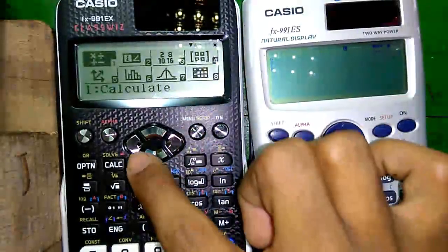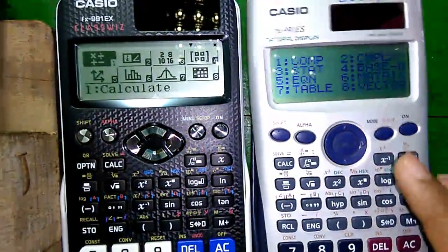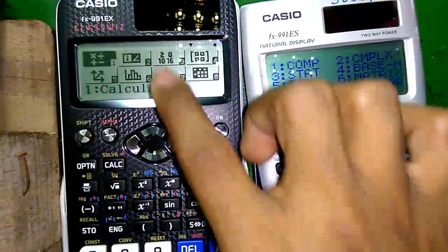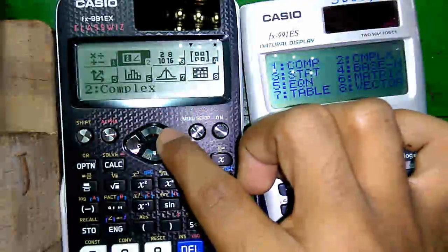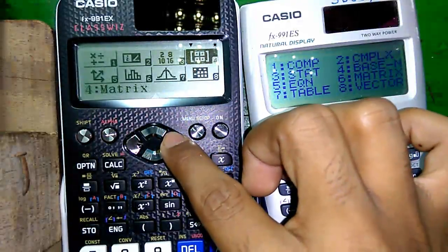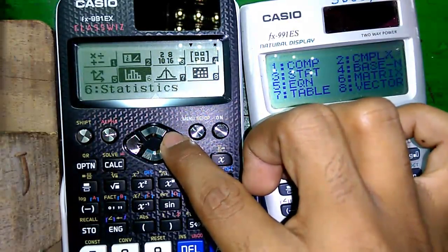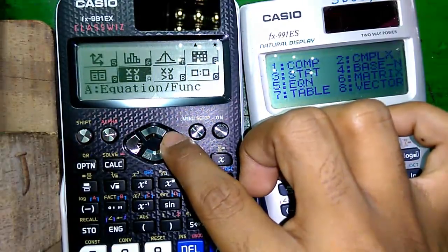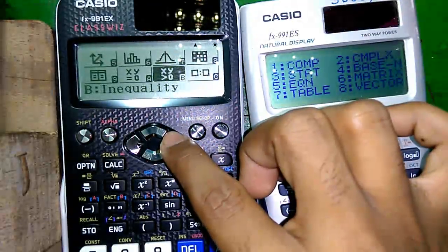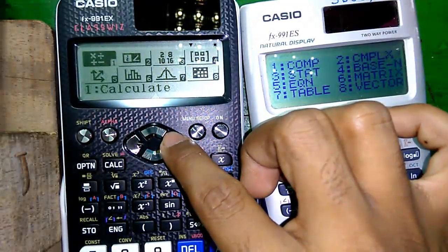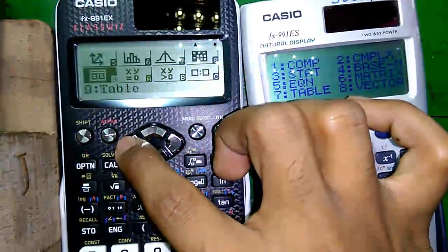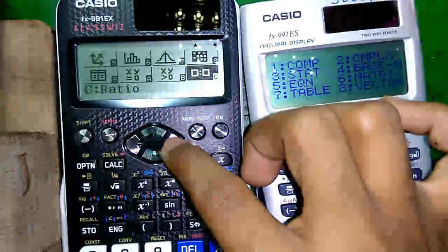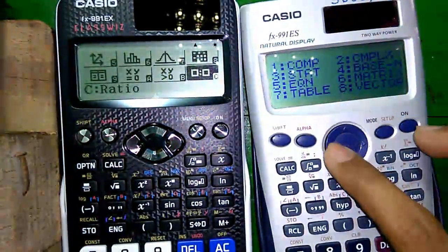Let me give you an overview of the menus here. The menu is list-based on the old one. And here the menu is icon-based. Here first mode is calculate, next complex number, basin, matrix, vector, statistics, distribution, spreadsheet, table, equation and function mode, inequality, and ratio mode. So you have total 12 modes compared to 8 modes on this calculator.